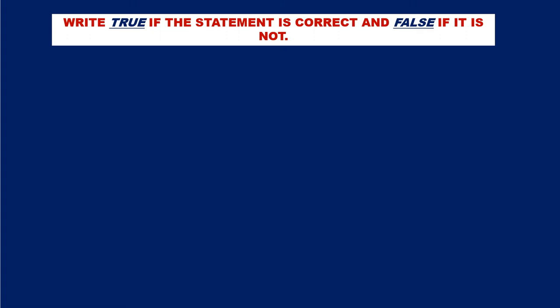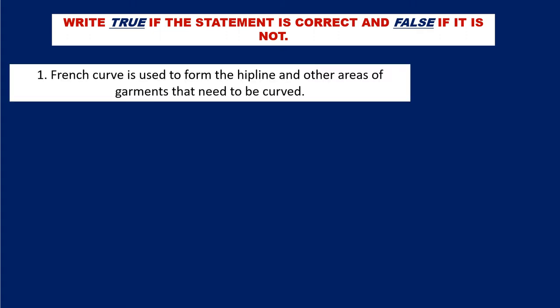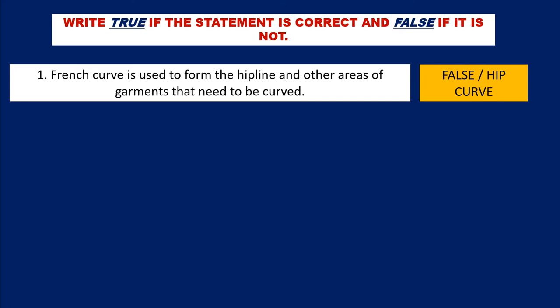Write true if the statement is correct and false if it is not. Question number 1: French Curve is used to form the hip line and other areas of garments that need to be curved. The answer is false, because French Curve is not used to form the hip line. The correct answer uses the hip curve — hip curve is used to form the hip line and other areas of garments that need to be curved.